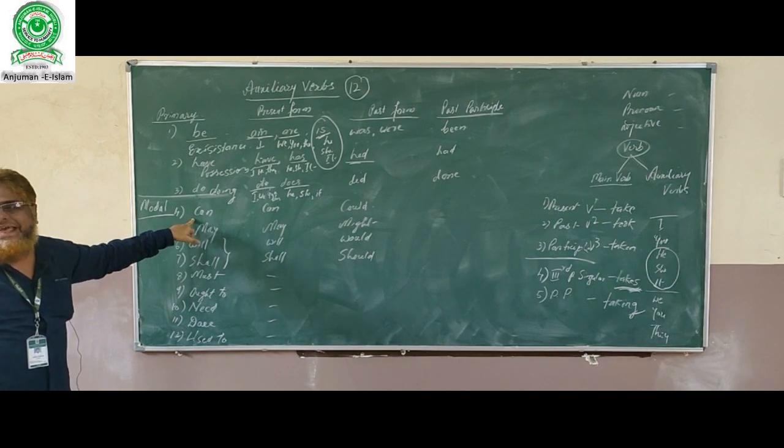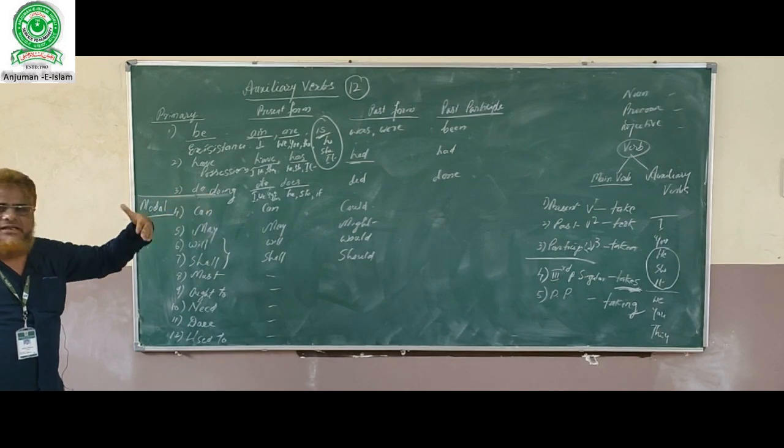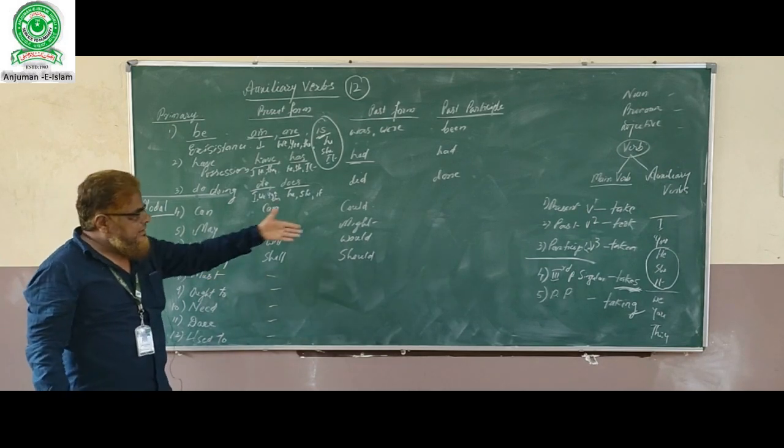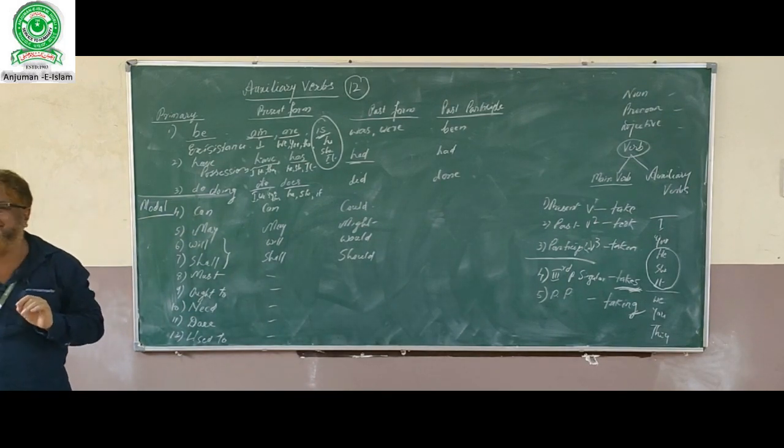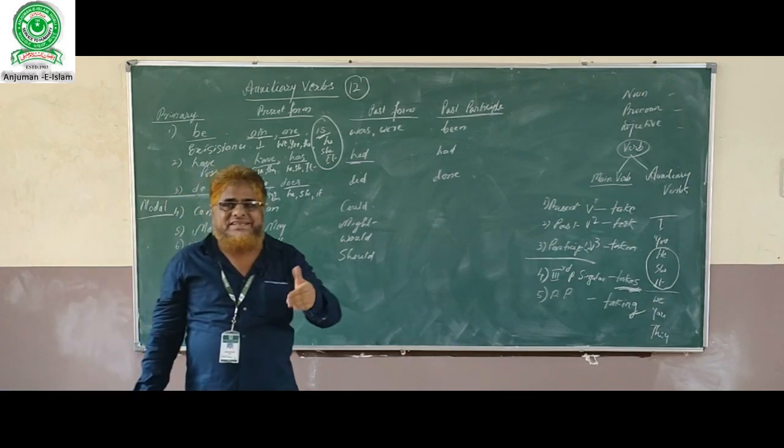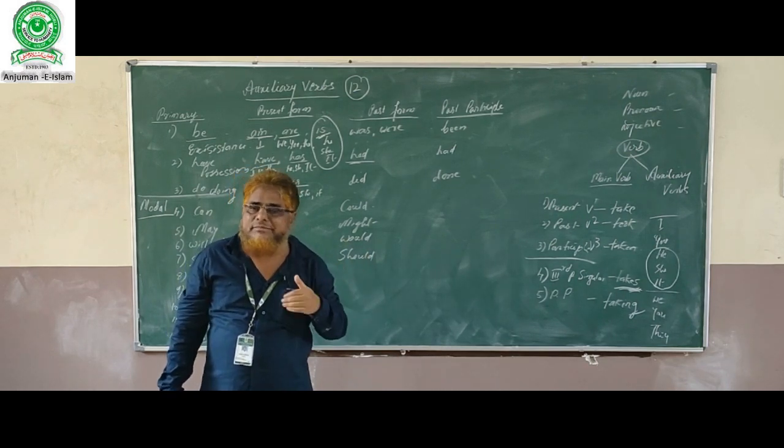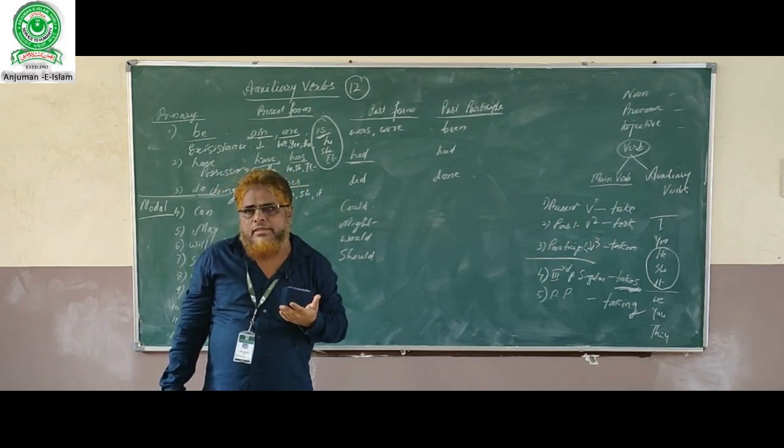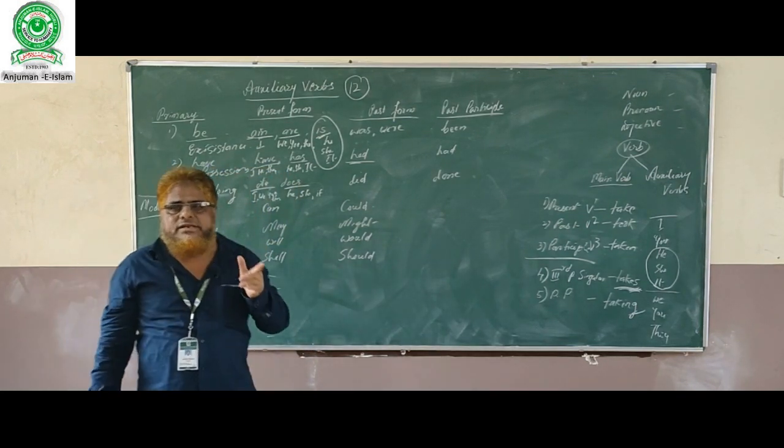Then we have very important 'can.' Can is a modal verb. They don't have past forms generally, but can has got a past form. May, might, will, and shall—these have similar features. They have got past forms. 'Can' expresses ability or capacity. If I say, 'I can do distinction,' that means it is my ability, my capacity. 'Can' expresses ability or capacity.